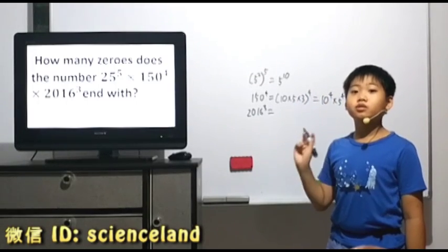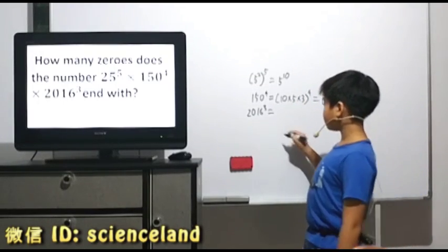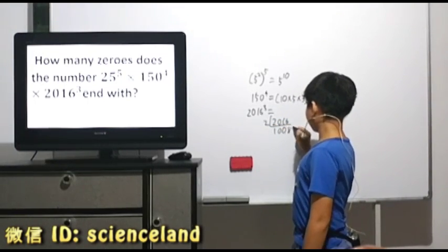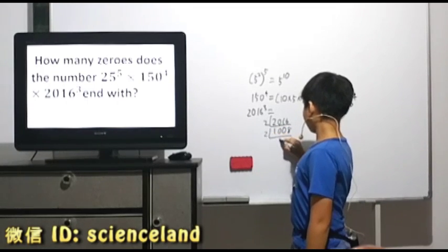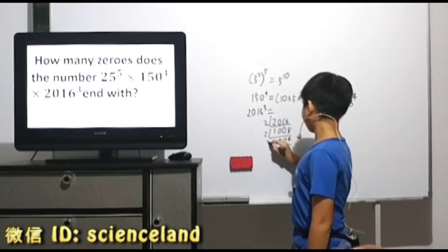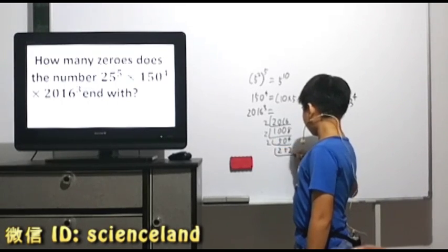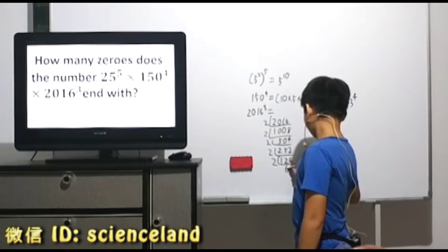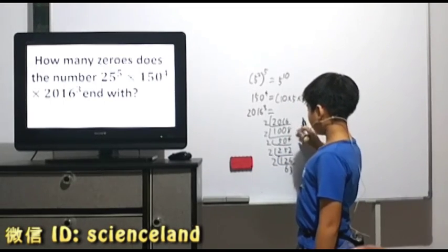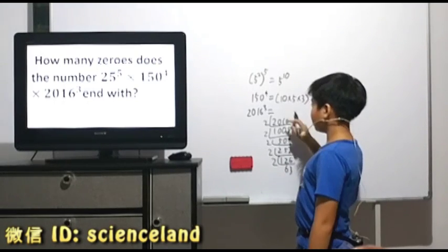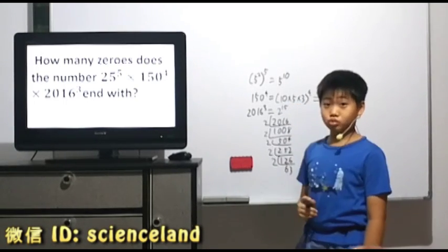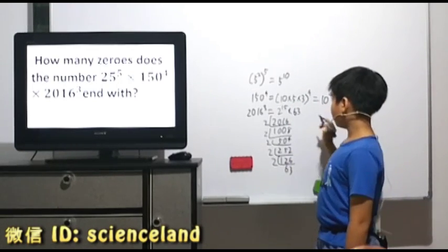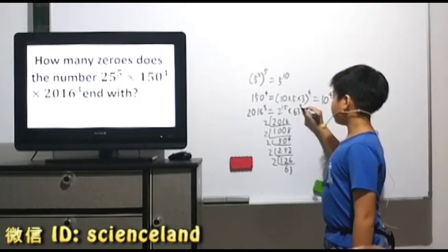First, we need to find how many tools are there. So, there will be 1, 2, 3, 4, 5, 5 times 3. 15 to the power of 3.